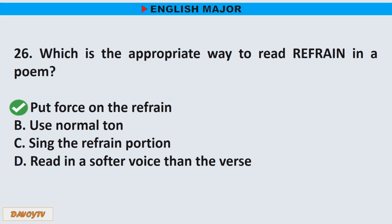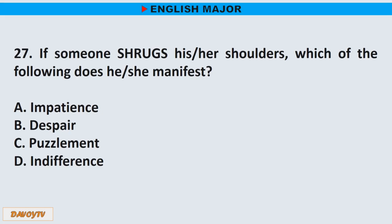Question number 27. If someone shrugs his/her shoulders, which of the following does he/she manifest? A. Impatience. B. Despair. C. Puzzlement. D. Indifference. The correct answer is letter D. Indifference.